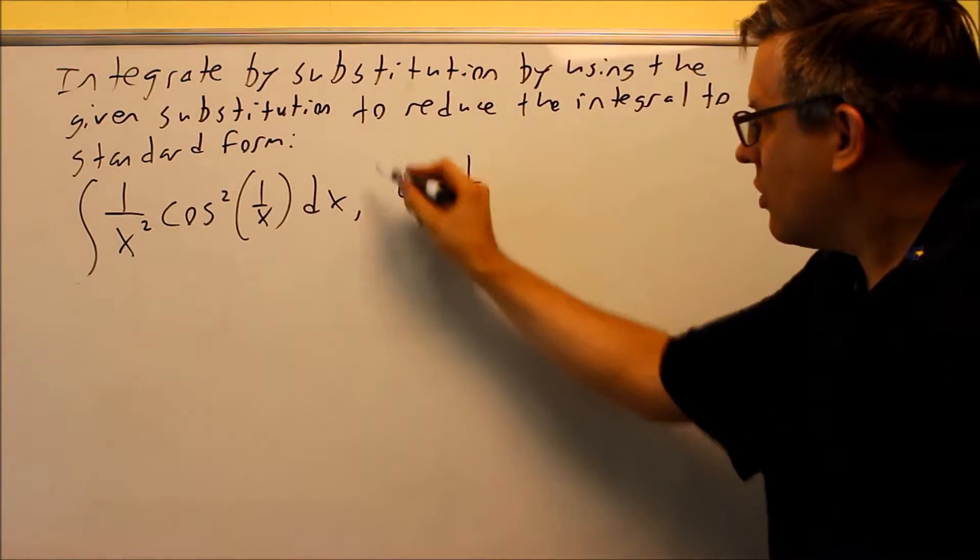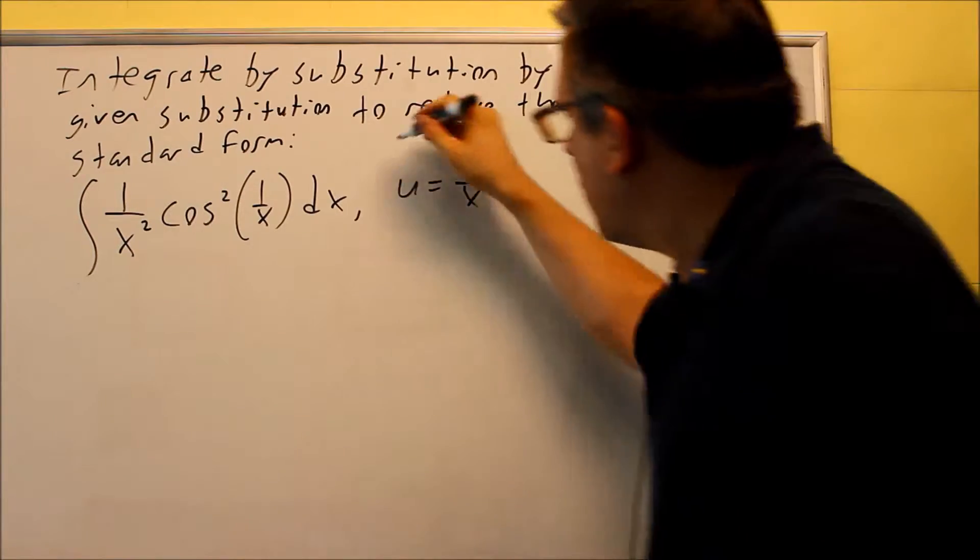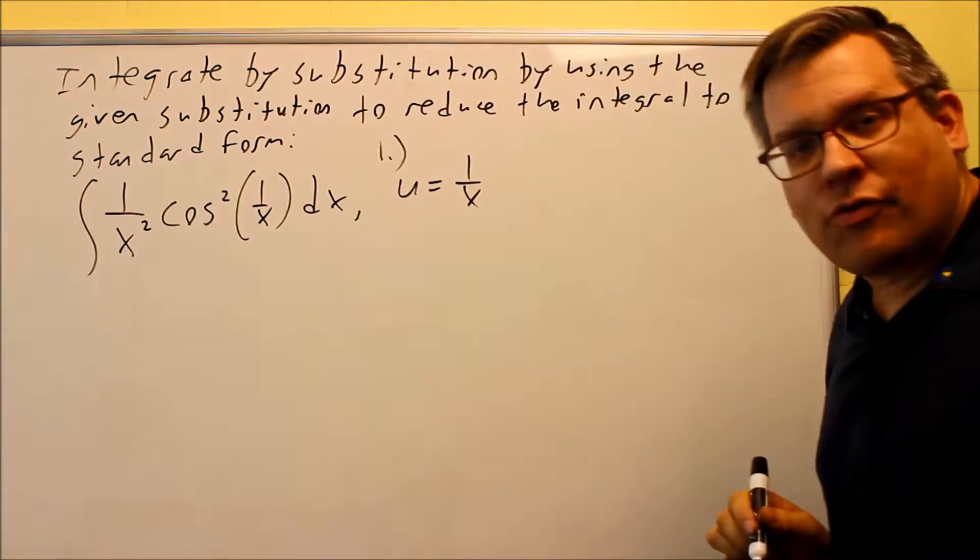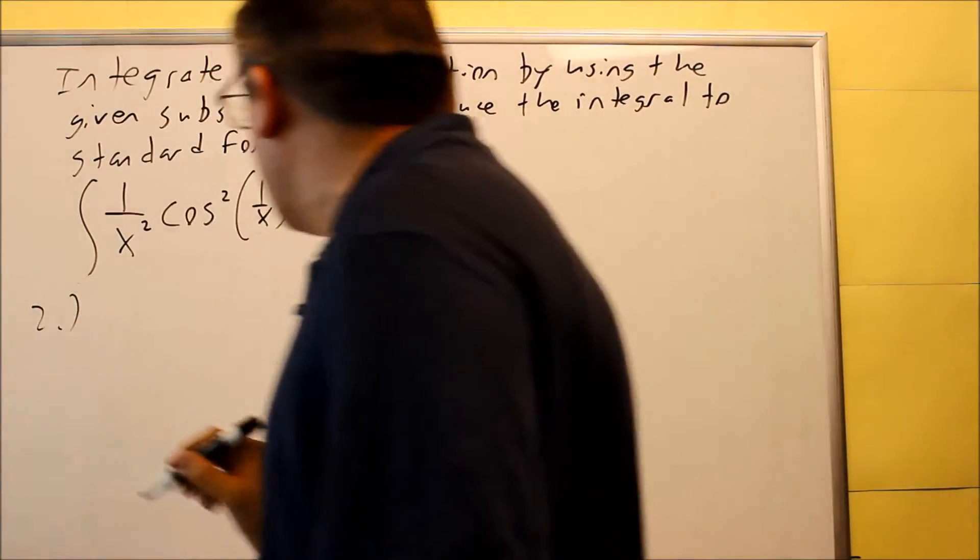Okay, for this problem they do give us the u again. They want us to use 1 over x, so therefore step 1 has already been done for us. We want to identify the u. We have it complete. We're ready to move on to step number 2.